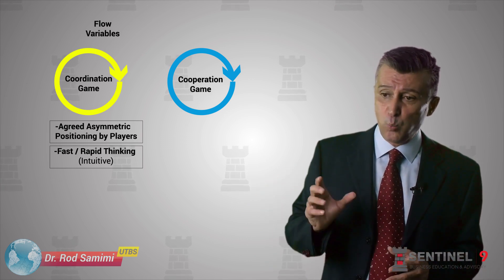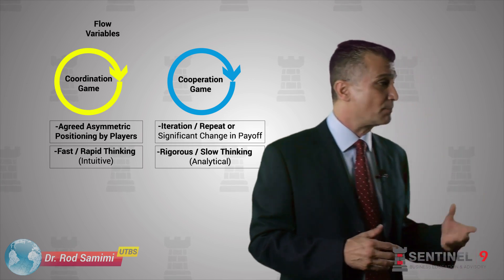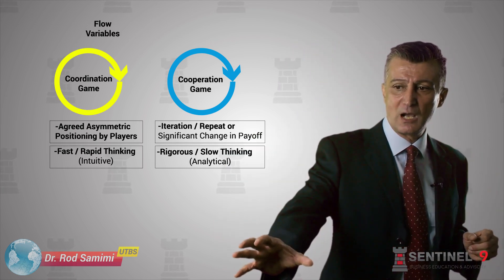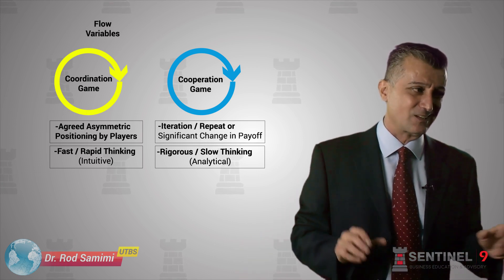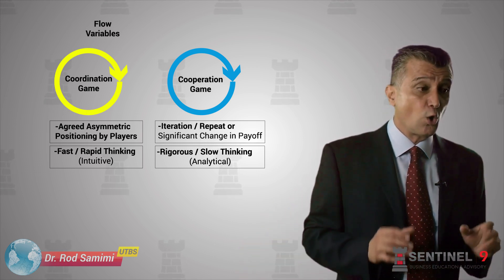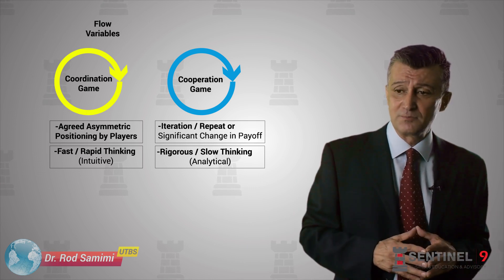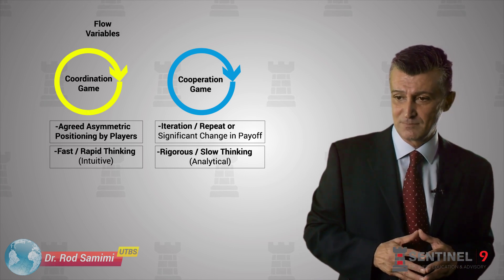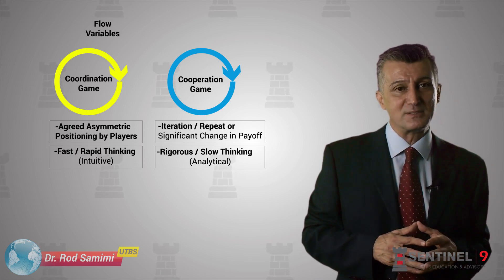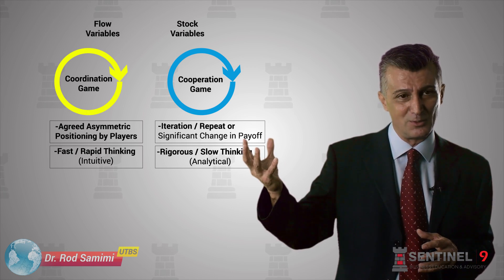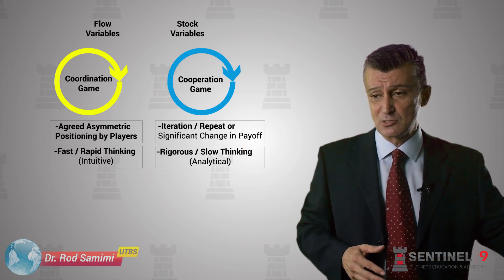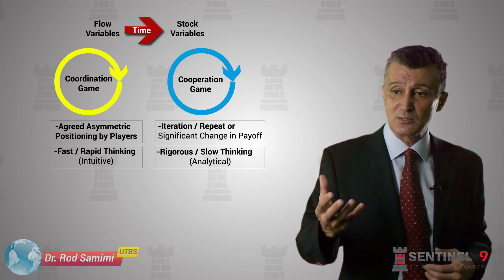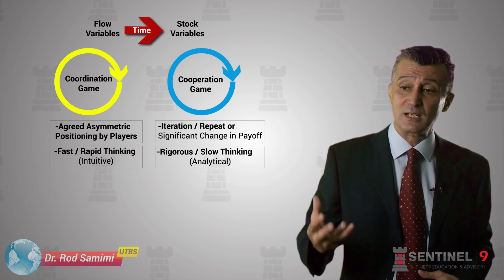Under two conditions, a cooperative game gets resolved. One is a massive change in the payoff structure of the players — gangsters use that often: 'Cooperate or we harm you.' That kind of approach is not systematically replicable. Or, the only time it gets resolved is if the game gets iterated, iterated, and played repeatedly. The outcome of a resolution of a cooperative game is a stock variable. The flow variables used in the coordination game, over a period played and iterated, can resolve a cooperative game and create a stock variable.